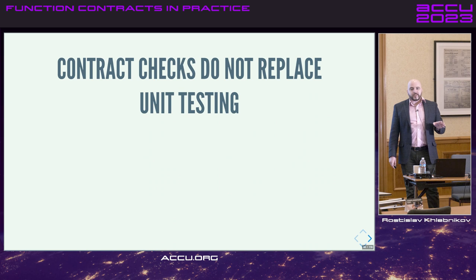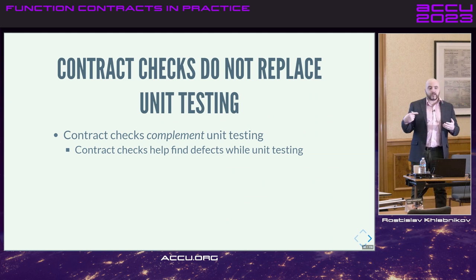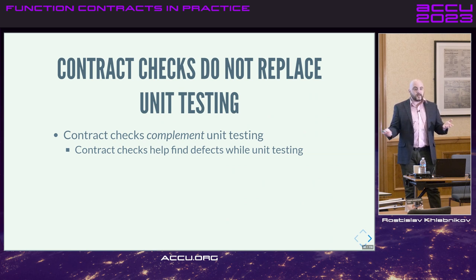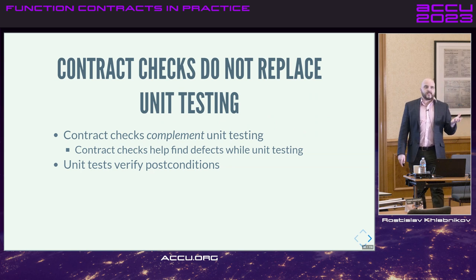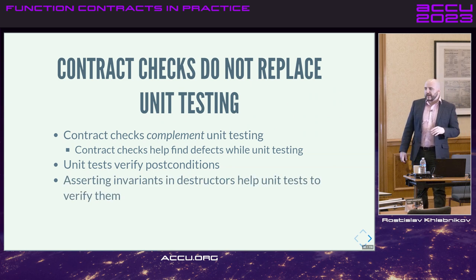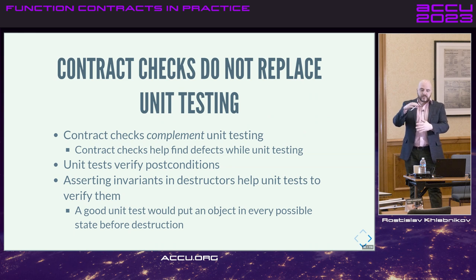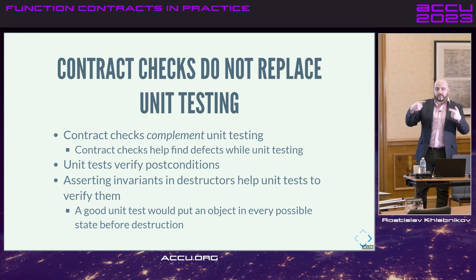It's important to understand that contract checking doesn't replace unit testing — they go hand in hand. The contract checks in your code, when you run your test driver, will notify you exactly where the problem happened if you get a contract violation. Unit tests in essence are machines to verify postconditions — you give your functionality some inputs and check that you got correct outputs and behavior. You can also assert your invariants in the destructor, and if you have a thorough test driver that puts your object into every possible state and then destroys it, you can assert that your member functions maintain the invariants.